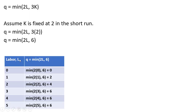Let's put a table together to see how output changes as we hire more workers in the short run, given that capital is fixed at 2. If labor is 0, output will be the minimum of 2 times 0 or 6, which is 0.